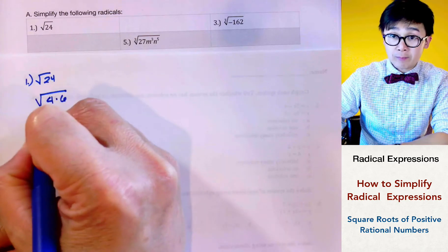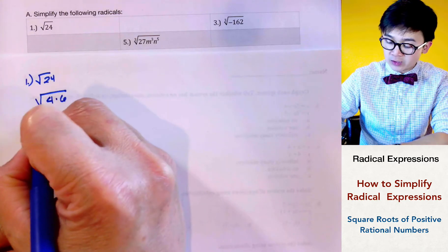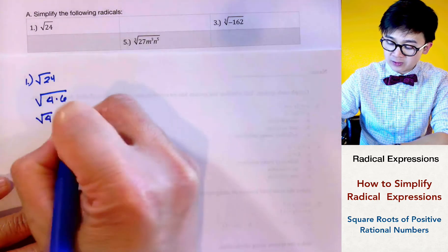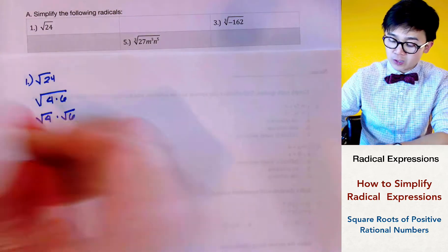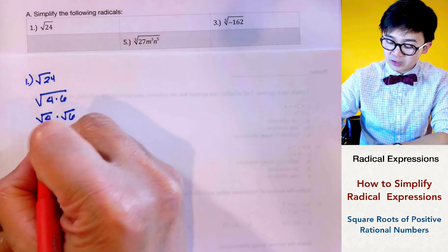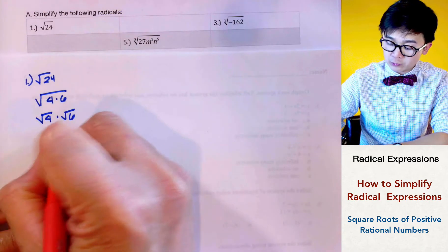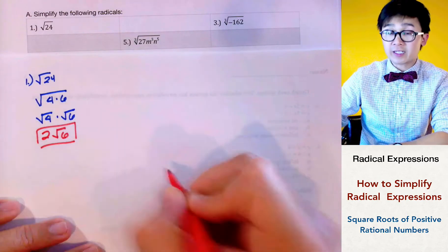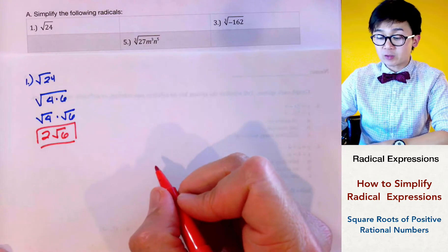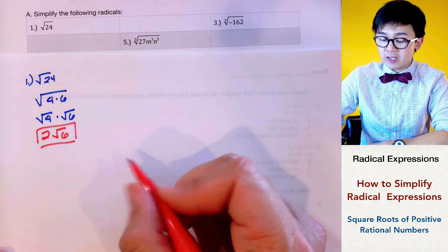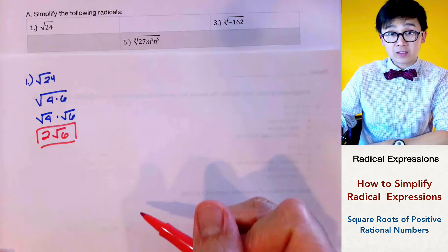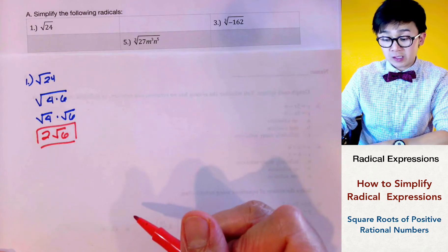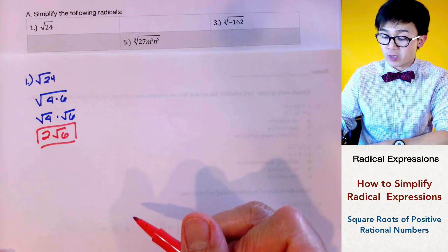If we separate the square roots, we have square root of 4 times square root of 6. Since square root of 4 is a perfect square, this simplifies to 2 times square root of 6. This is the idea of simplifying square roots by factoring your numerical value with a perfect square.